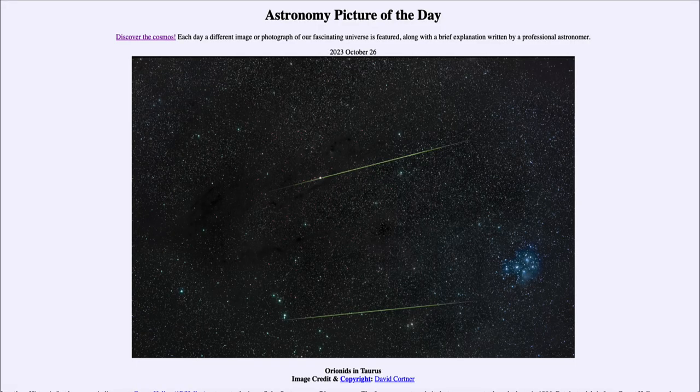Greetings and welcome to the introduction to astronomy. One of the things that I like to do in each of my introductory astronomy classes is to begin the class with the astronomy picture of the day from the NASA website, apod.nasa.gov/apod. Today's picture for October 26th of 2023 is titled Orionids in Taurus.